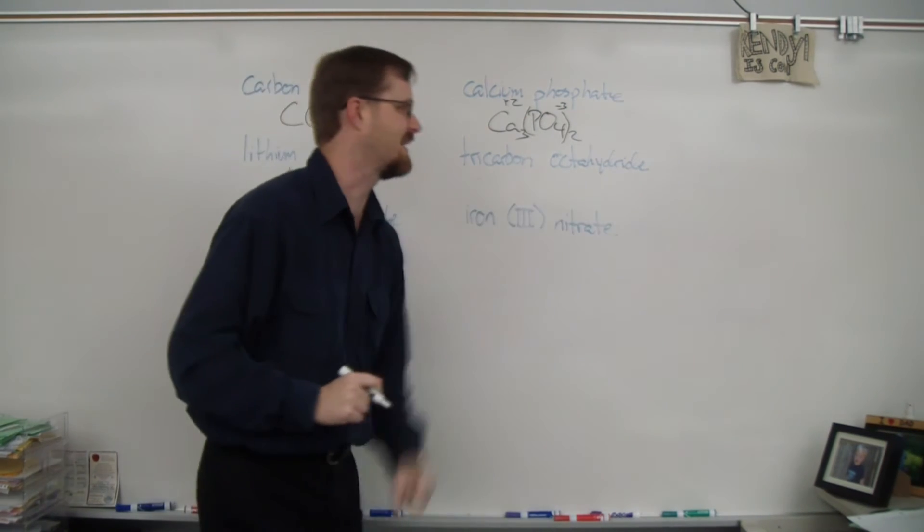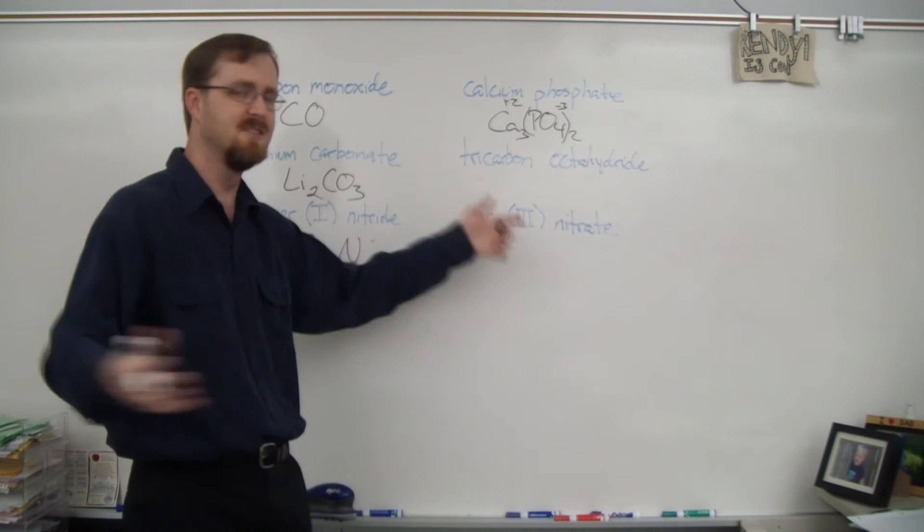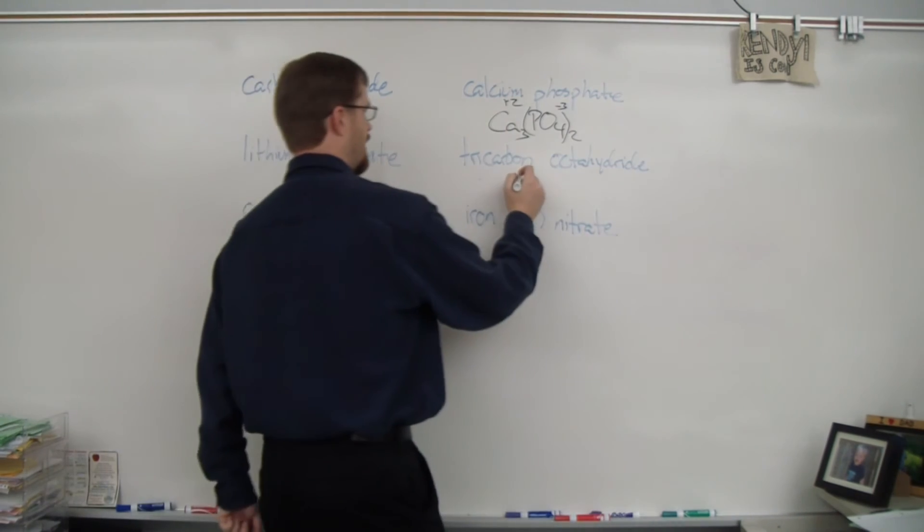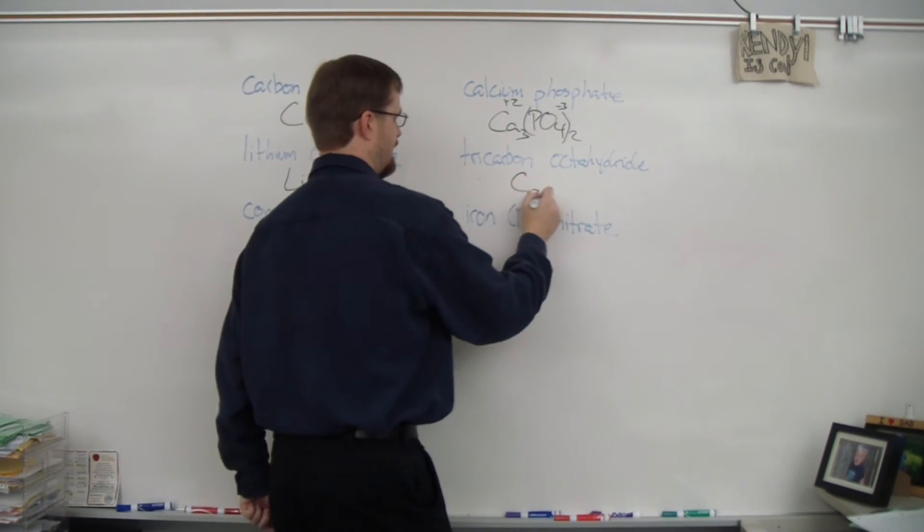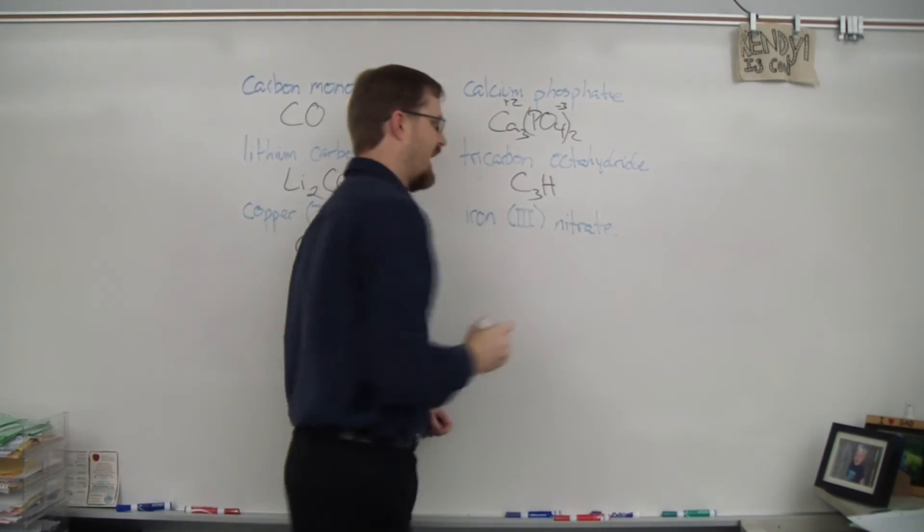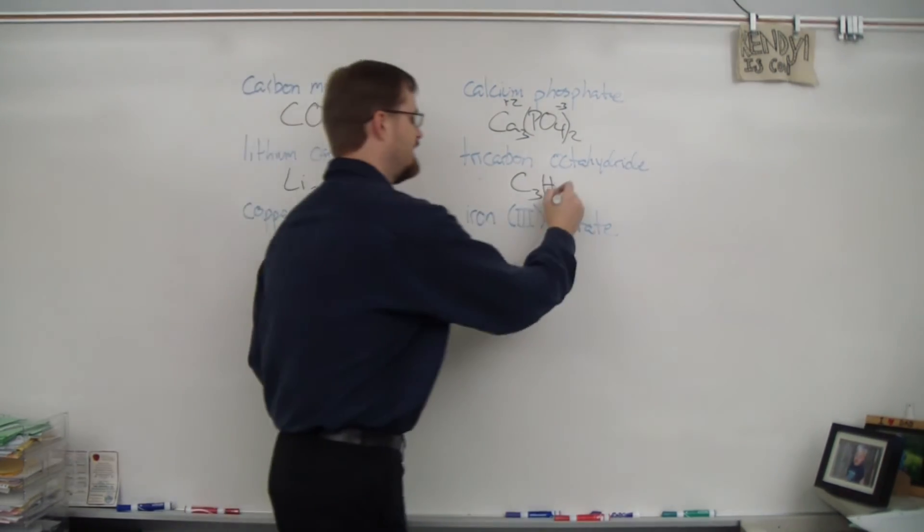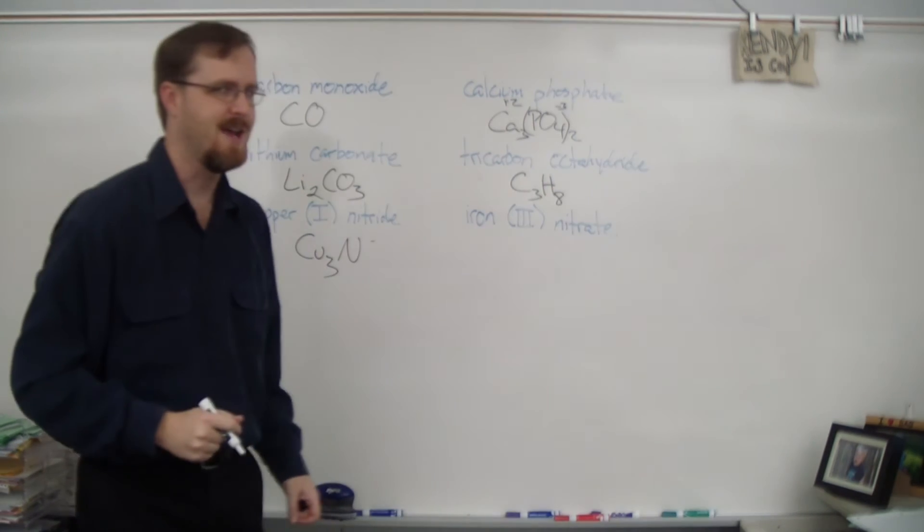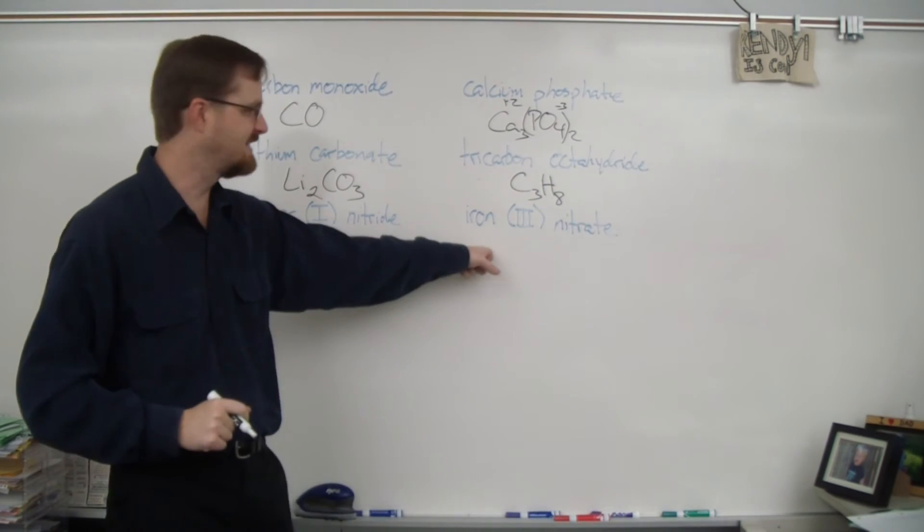Next one. So we have tricarbon octahydride. I've got prefixes, that makes it easy. So carbon is C and there's tri so that means three. Hydride, that means hydrogen which is H. Octa is eight. C3H8. Very simple. One last example.